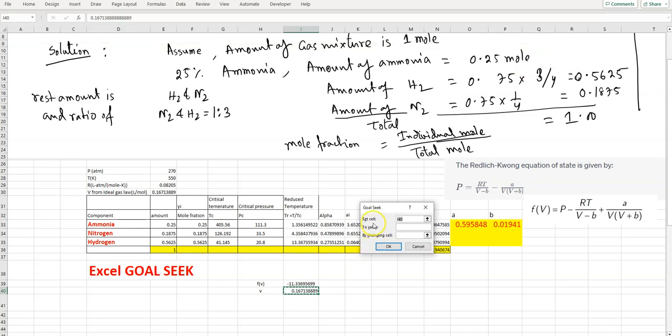We're solving this nonlinear equation. If f(V) equals 0, then that V will be the specific volume. We set f(V) equal to 0 - this cell I39 - by changing the V cell. It will change the V value and give us an f(V) value of 0. Now if you enter that, we should get the answer.